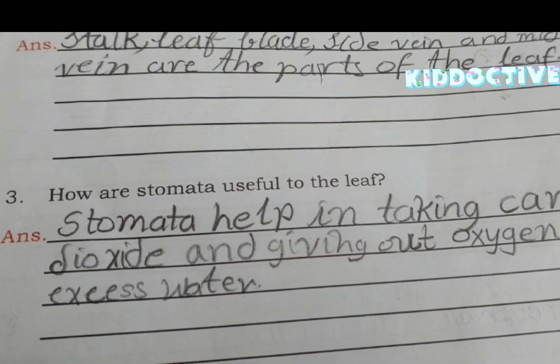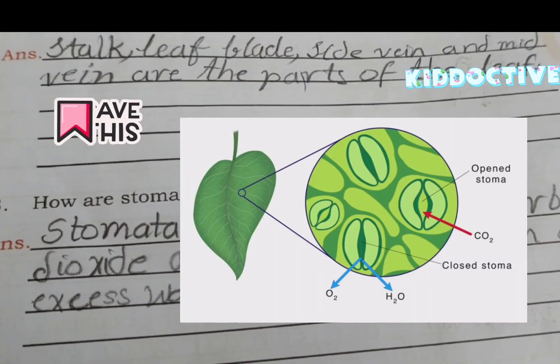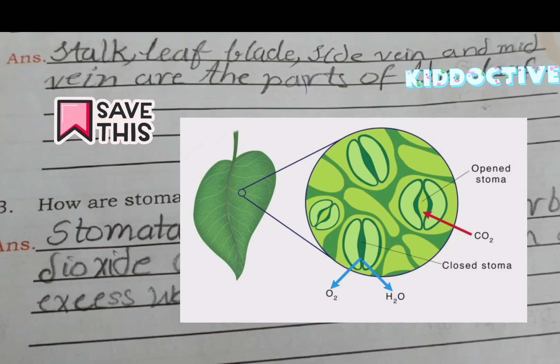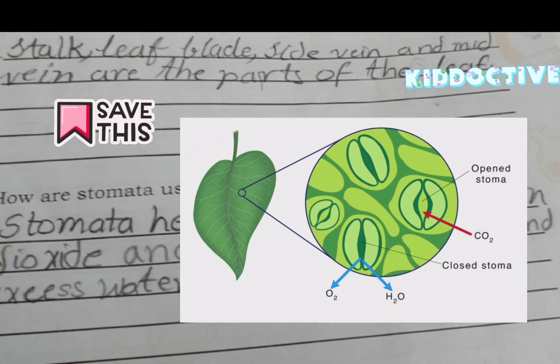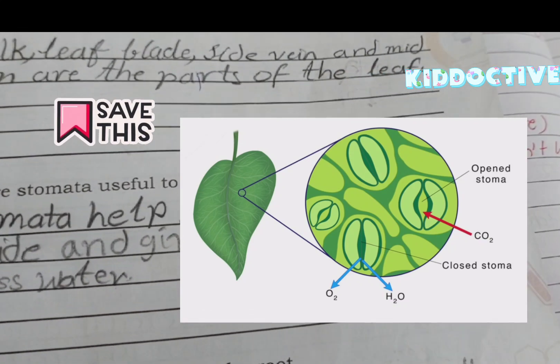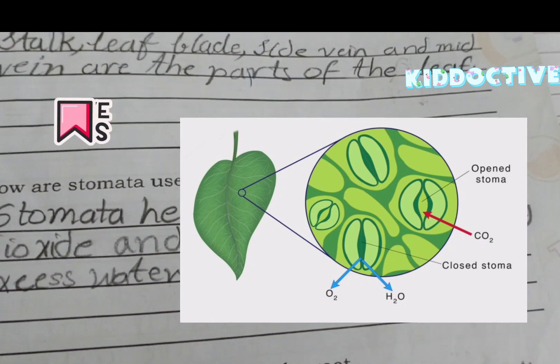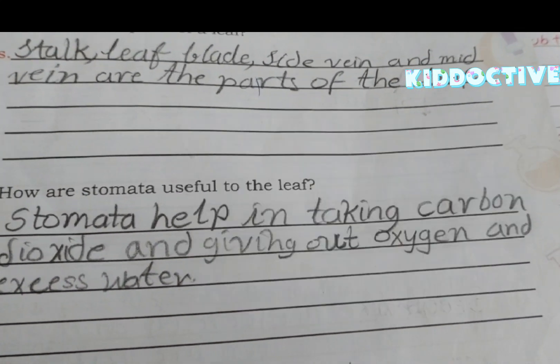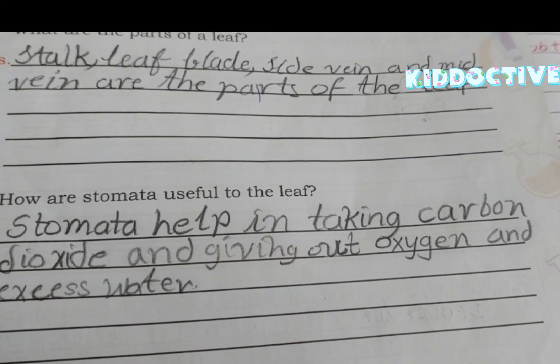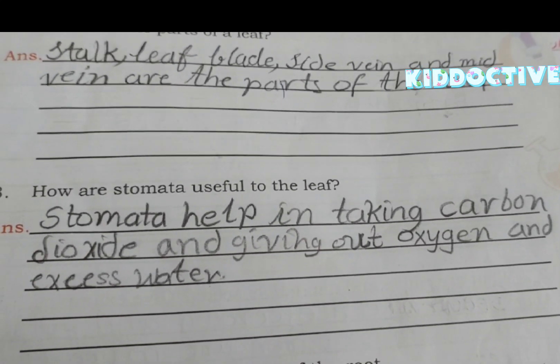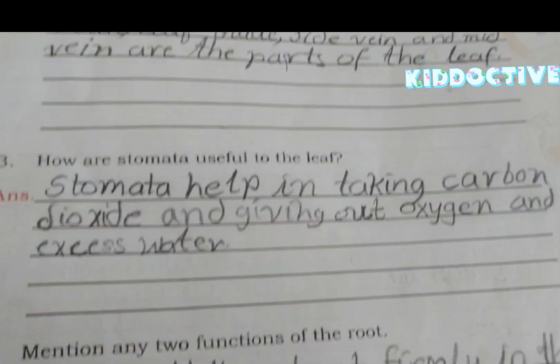How are stomata useful to the leaf? Stomata help in taking carbon dioxide and giving out oxygen and excess water.